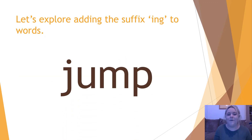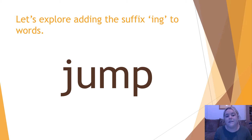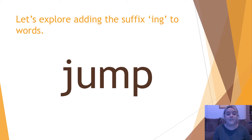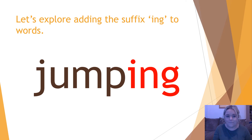Let's have a go and see if you can recognise what we need to do to the word. Do we need to drop the e and add -ing? Do we need to double the consonant because there is a short vowel sound just before the consonant? Or do we just simply add -ing? Let's look at 'jump.' It doesn't have an e, so I don't need to drop the e. Does it have a short vowel sound? No, it doesn't, so I just simply add -ing. I am jumping on my bed. Jumping.